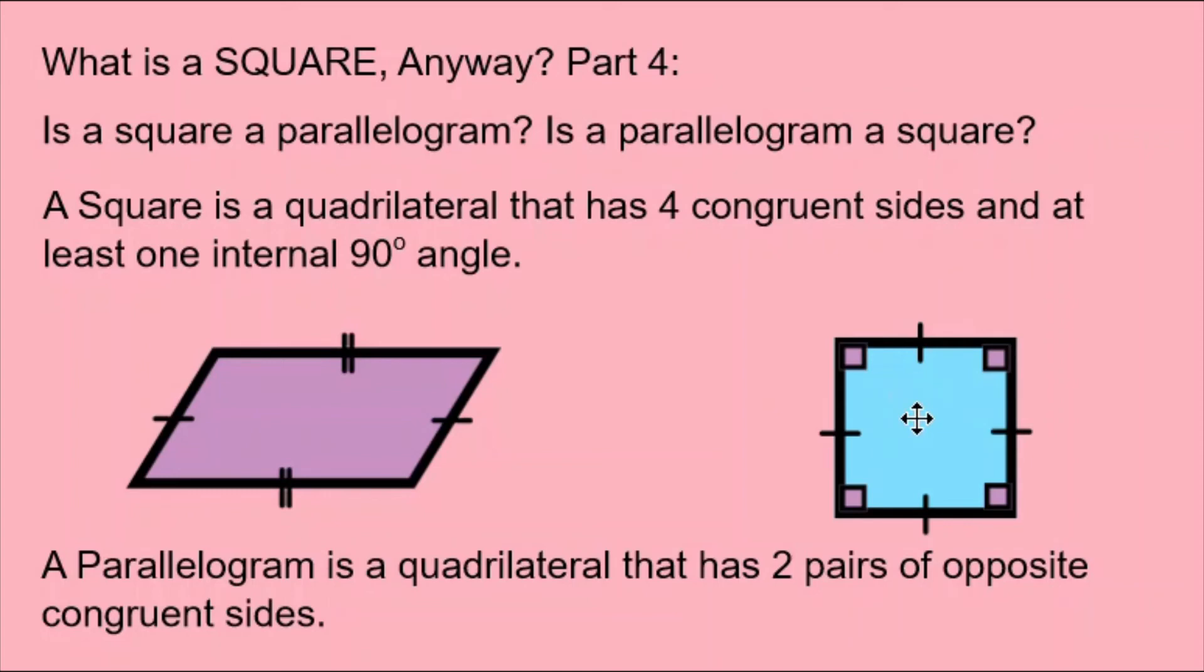But a square, although it has four congruent sides, can be said to have two pairs of opposite congruent sides. So therefore a square is a parallelogram.